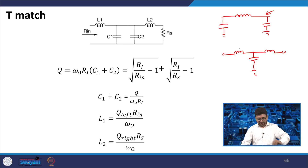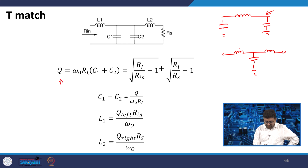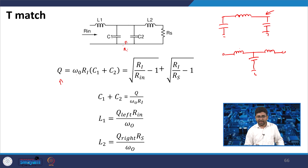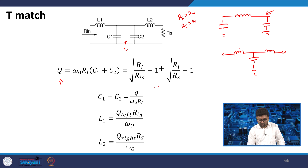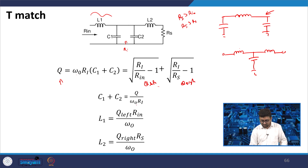As a circuit designer, you would choose pi match to avoid two inductors. But for off-chip matching where you have freedom to use inductors, you can use T match as well. For T match, the quality factor Q = ω₀ × Ri × (C1 + C2), where C1 and C2 are in parallel. The imaginary impedance Ri is in parallel with the capacitor, so Ri > Rin and Ri > Rs. Hence Q_left = √(Ri/Rin − 1) and Q_right = √(Ri/Rs − 1).